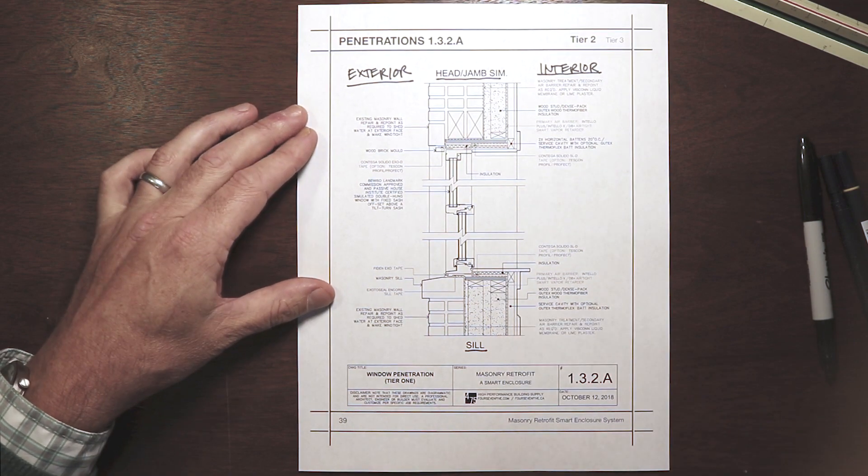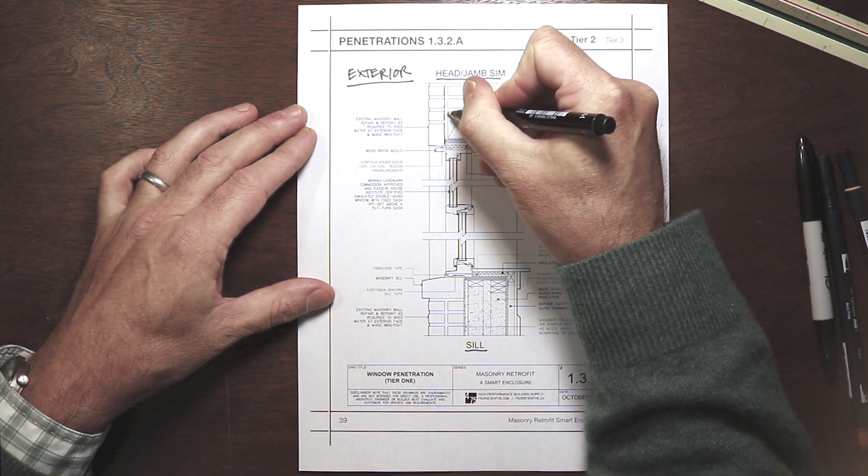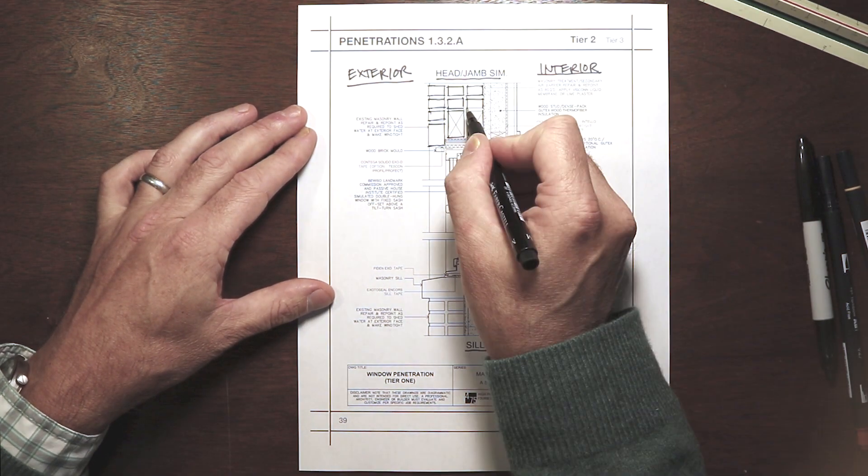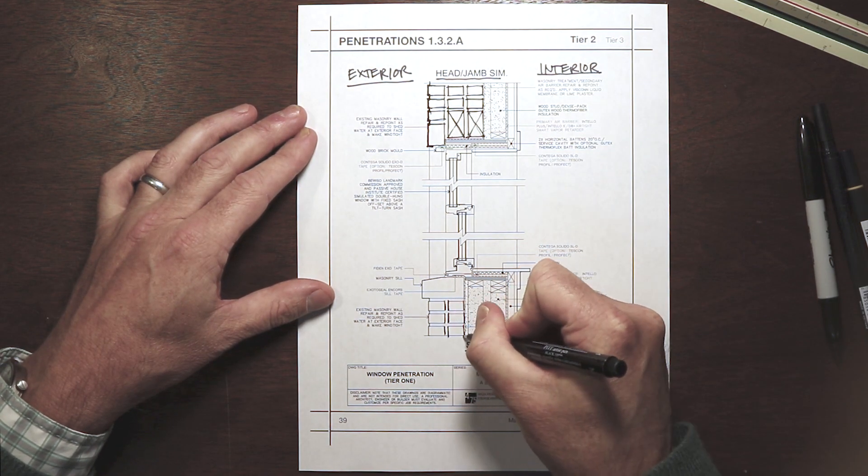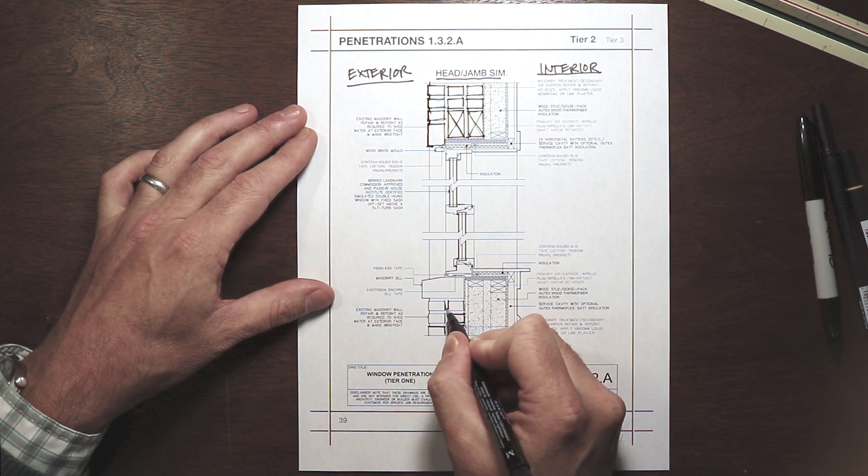Every penetration adds risk of failure to our complete airtight enclosure. Penetrations must be fully integrated into the continuous control layers, and windows and doors are the biggest and most obvious penetrations.